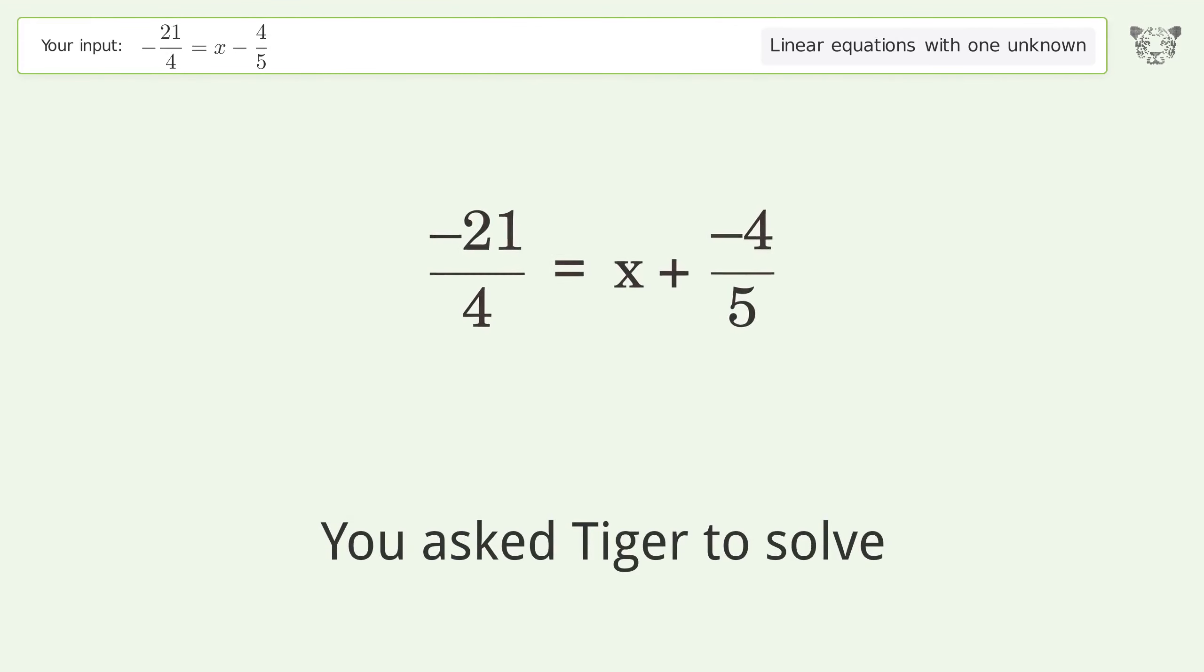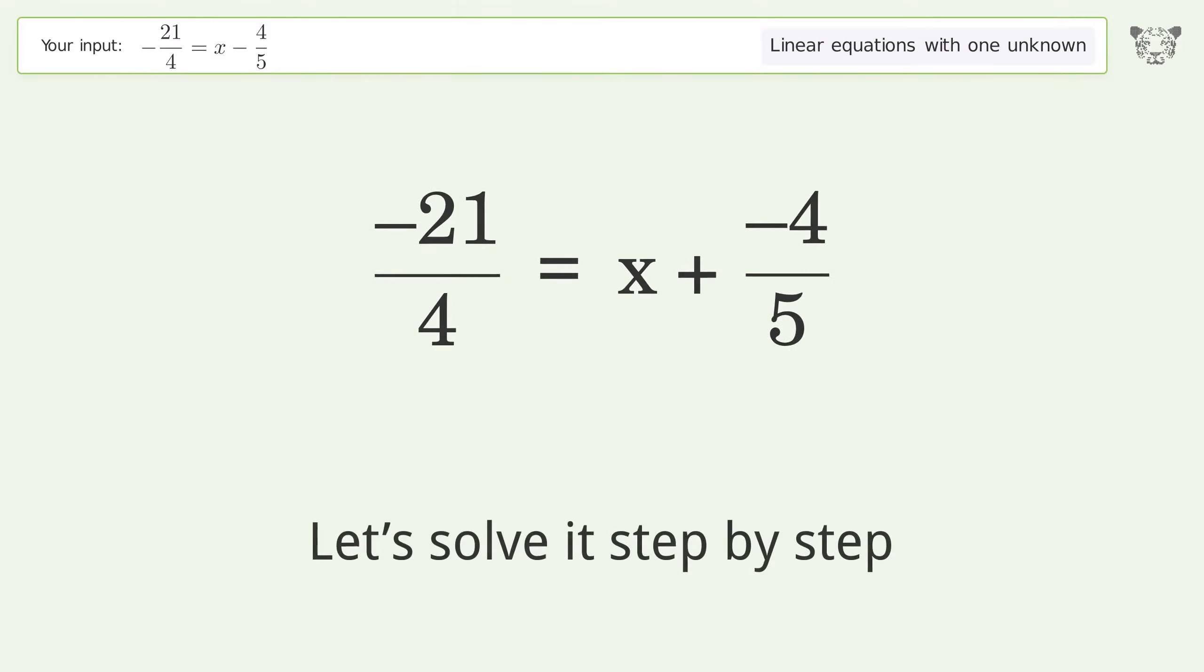You asked Tiger to solve this. It deals with linear equations with one unknown. The final result is x equals negative 89 over 20. Let's solve it step by step. Swap sides.